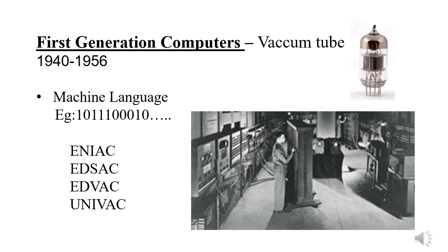Examples of first generation computers are ENIAC, EDSAC, EDVAC, and UNIVAC, which we encountered in the history of computers. A common feature of the first generation of computers was their large size. In the picture, you can see there is one computer filling the whole room.